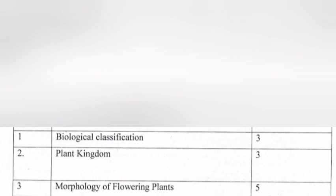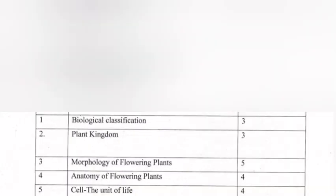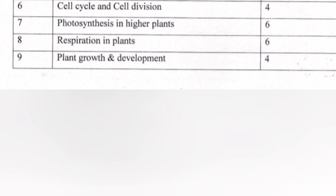Chapter four - Anatomy of Flowering Plants, four marks. Chapter five - Cell: The Unit of Life, four marks. Chapter six - Cell Cycle and Cell Division, four marks. Chapter seven - Photosynthesis in Higher Plants, six marks.